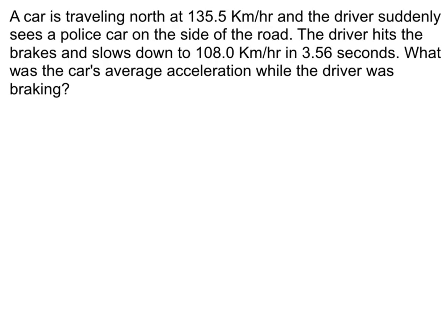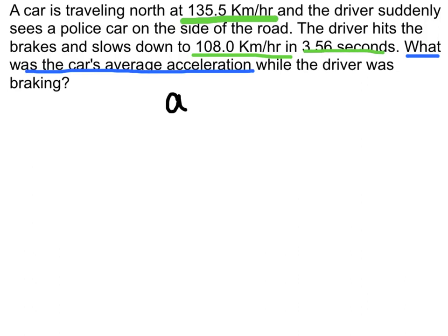Now let's try using this equation in a problem. A car is traveling north at 135 kilometers per hour. The driver suddenly sees a police car on the side of the road, hits the brakes, and slows down to 108 kilometers per hour in 3.56 seconds. The question asks: what was the car's average acceleration while braking? I'll underline the given amounts in green and note that we're calculating acceleration, then write down the equation: delta V over delta T.